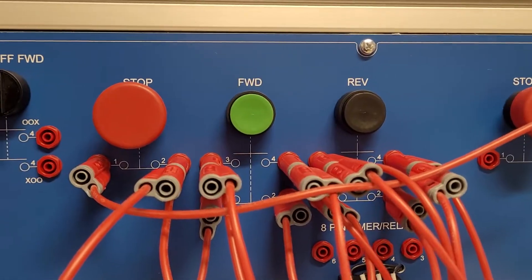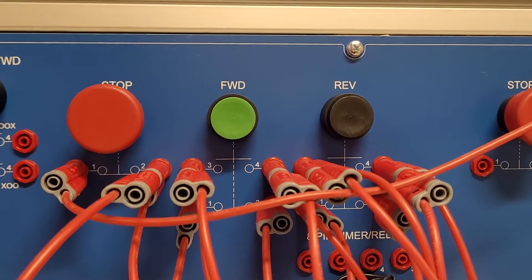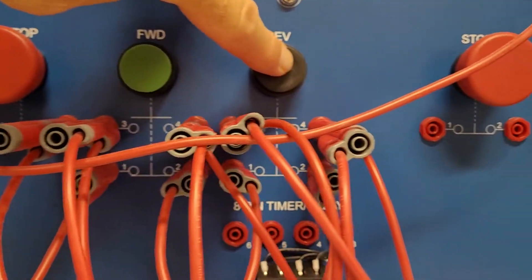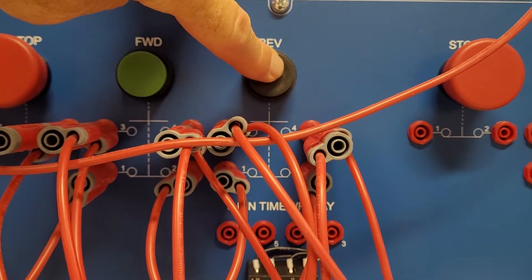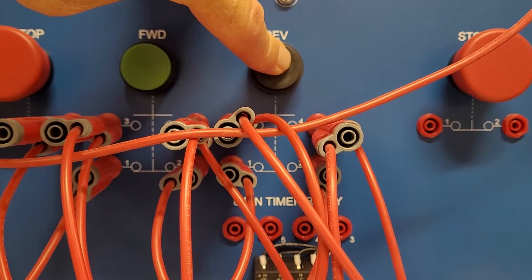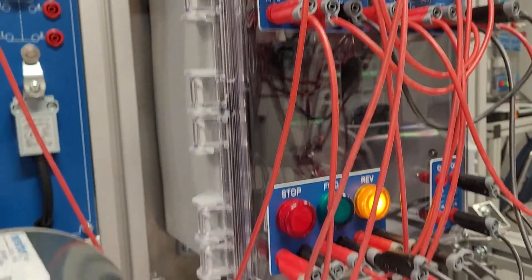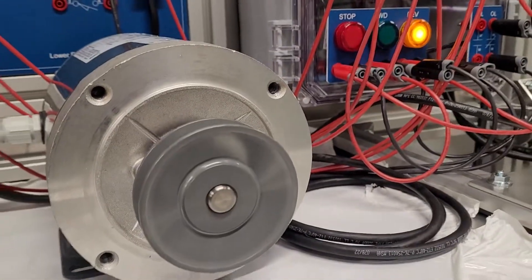So what we're going to do now is we're going to change from forward to reverse. So what happens is when you hit the reverse button, it breaks the contact interlocking the forward circuit, and then it breaks the contact that drives the coil on the reversing starter. So now we're in reverse.